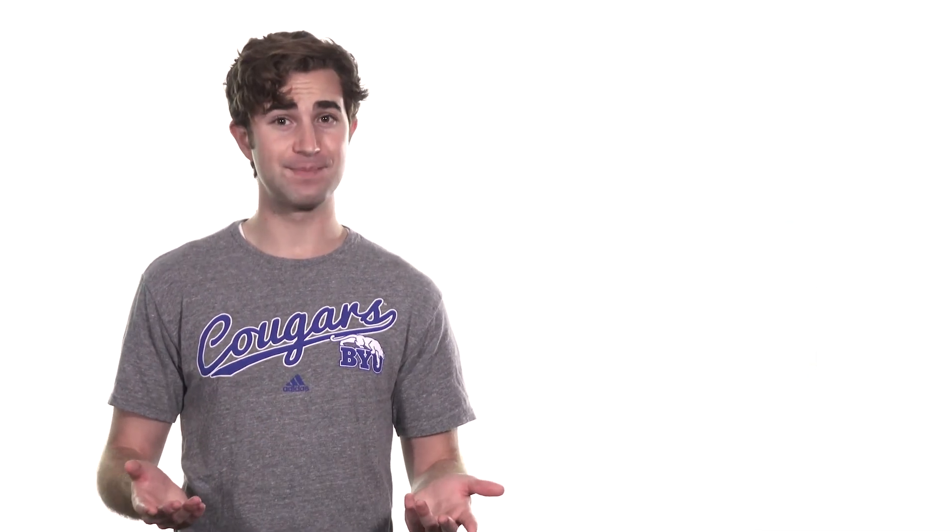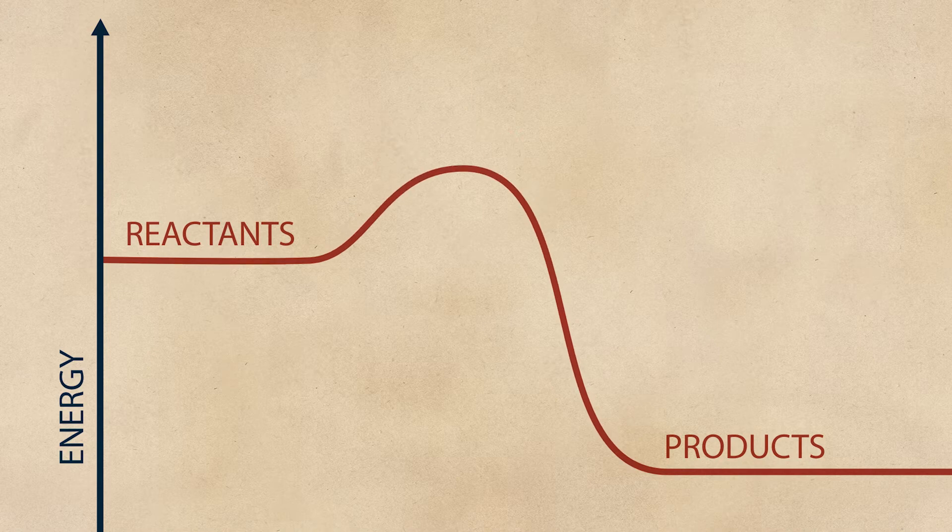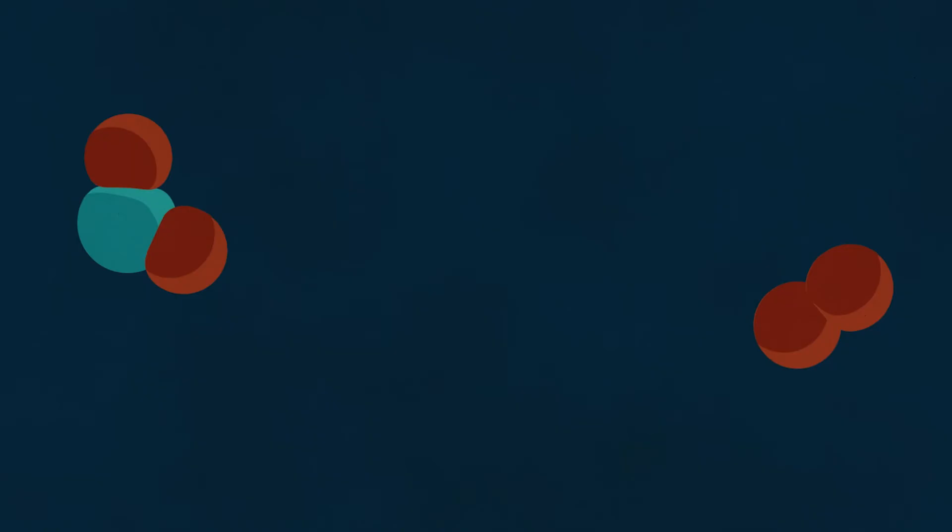There are also molecules called catalysts that can speed up reactions but aren't used up in the process. They do this by lowering the activation energy or by helping the reacting molecules orient properly, which makes the activation entropy more favorable. Sometimes they do both. Because they aren't consumed when helping other molecules react, they can be used over and over again.